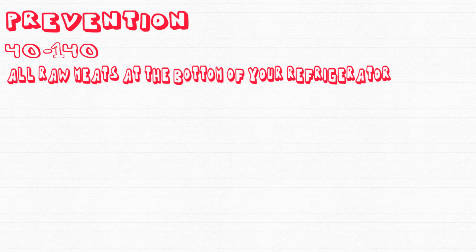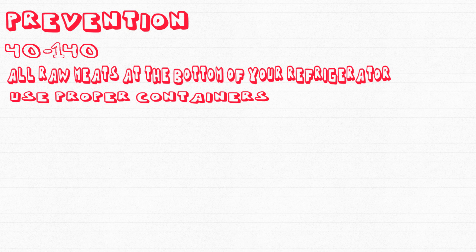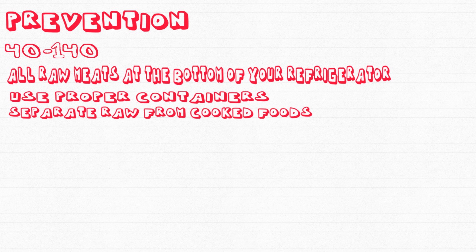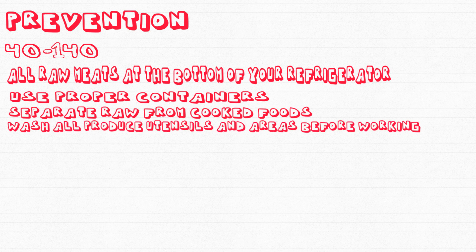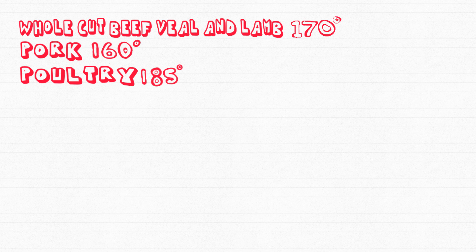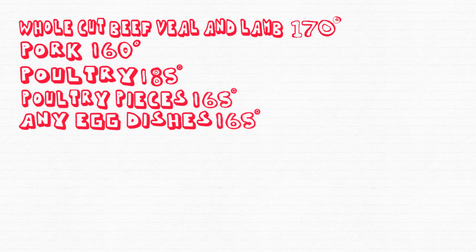Here are some ways you can prevent contamination. Bacteria can grow between 40 and 140 degrees Fahrenheit, so keep cold foods below 40 and hot foods above 140 degrees. Be sure to place raw meat, poultry, and seafood at the bottom of your fridge and use appropriate containers to prevent spillage and contamination. Keep raw foods away from cooked foods during storing or preparation. Wash fresh produce thoroughly before eating, and clean equipment and areas with warm soapy water, sometimes bleach as required. Whole cut beef, veal, and lamb should be cooked to 170 degrees; pork to 160 degrees; poultry to 185 degrees; poultry pieces to 165 degrees; and egg dishes to 165 degrees as well.